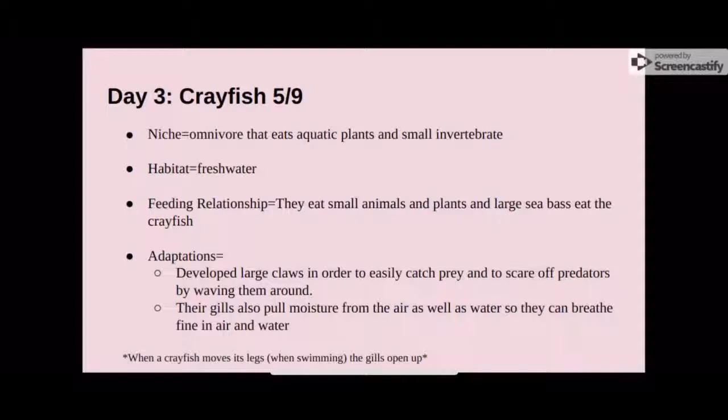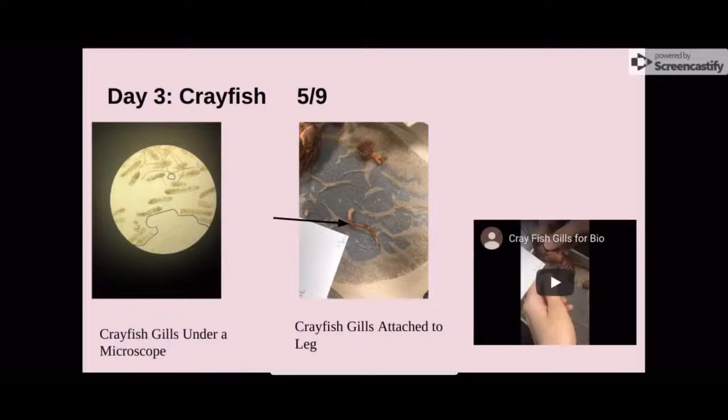The adaptations of the crayfish are that it has large claws in order to easily catch prey and to scare off predators. Their gills pull moisture from the air as well as water, so they can breathe both in the air and in the water. The picture on the left shows the gills under a microscope, used for respiratory functions. The picture on the right shows the gills attached to the leg, and a video shows how when the legs are moved, the gills also move.